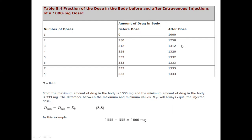Continuing this pattern — each subsequent dose adds 1000 mg to the 25% remaining from the previous dose — the amount accumulates until it reaches a maximum of 1333 mg. At that point, 333 mg remains in the body as the trough (minimum) before each new dose.